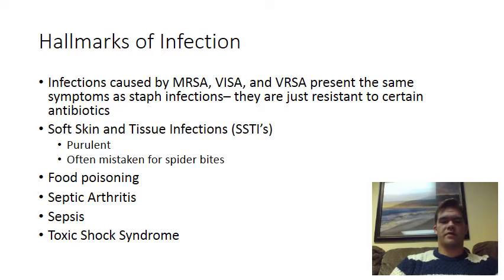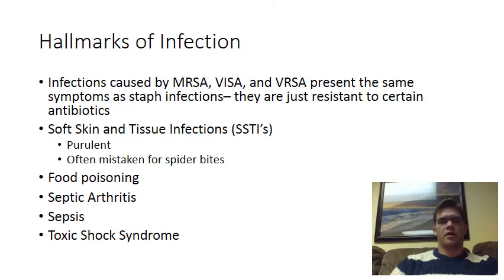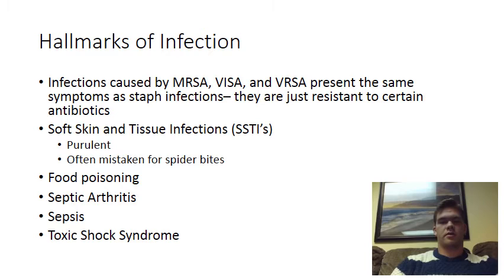When this sort of infection is found not in a hospital setting but in the community, the doctor will often try to treat it without antibiotics — draining the infected area of pus and having the patient use proper hygiene when caring for the wound afterward. But if the SSTI presents as cellulitis, where there's no purulent area — the skin is just red and swollen with no pus to drain — or if the patient is in a hospital setting, they might go straight to using antibiotics to treat the infection.